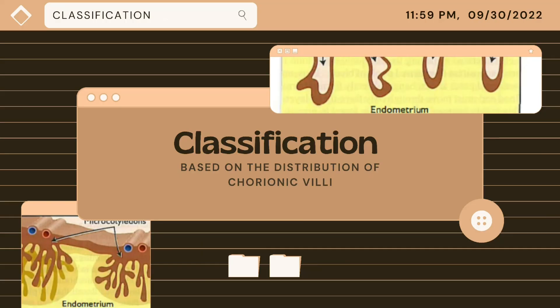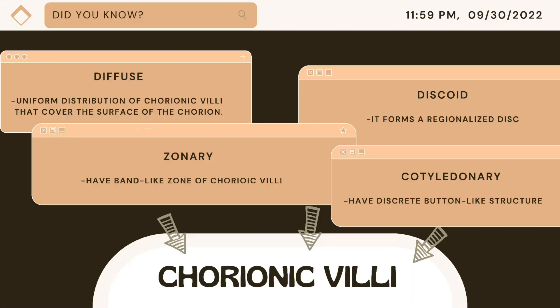To further our knowledge about placentas, did you know that placentas are classified according to the distribution of chorionic villi? These chorionic villi are small, finger-like projections which can be in the form of diffuse, zonary, discoid, and cotyledonary. A good example of an animal with diffuse placenta are pigs. It has a uniform distribution of chorionic villi that cover the surface of the chorion.